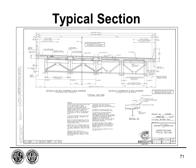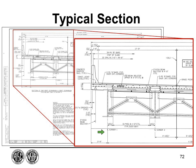The typical section shows superstructure features and dimensions, including roadway width, girder types, and spacing. It also shows girder spacing, cross frames, deck reinforcing, and barriers, giving an overall picture of the cross-sectional layout of the superstructure.